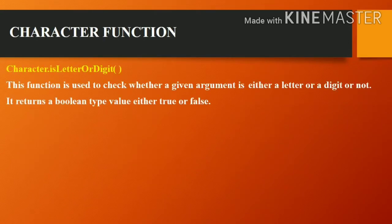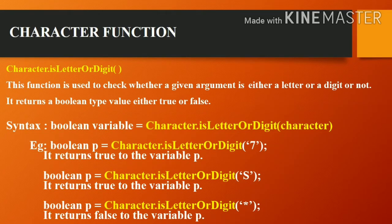The next character function is Character.isLetterOrDigit(). This function is used to check whether a given argument is either a letter or a digit. For example, '7' is a digit, so it returns true. 's' is also a letter, so it returns true. An asterisk '*' is not a letter and not a digit, so it returns false to variable p.